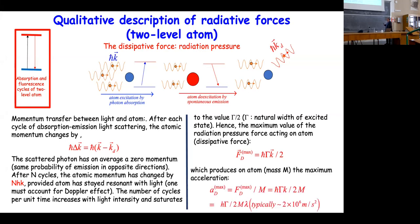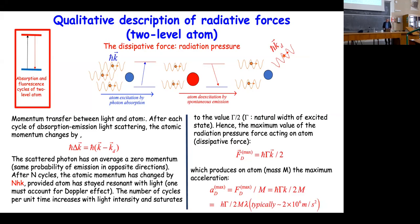From this radiation pressure force you can immediately obtain the maximum acceleration, which is ℏkγ/2m. For a typical atom such as sodium, this acceleration is about 2×10⁶ m/s² — about 10⁵ times the acceleration due to gravity. This means an atom can be braked very efficiently by absorbing light propagating in the opposite direction of its velocity.